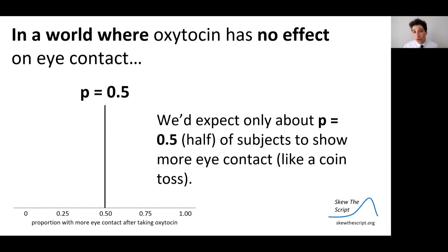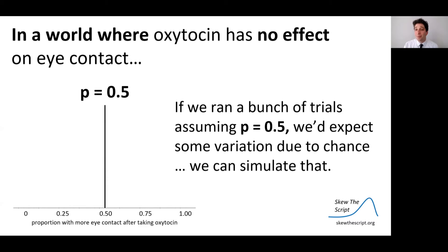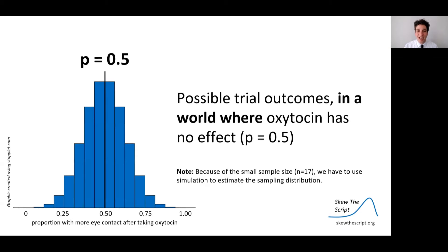So imagine a world where oxytocin has no effect on eye contact — we'd expect only about half the patients, or 50%, to show more eye contact. It would be like flipping a coin. Now imagine running many trials assuming the null — that oxytocin has no effect. By chance with random assignment, you might expect some variation: some trials, just by chance, might have more patients showing higher eye contact in the oxytocin group, and some fewer, even though it didn't do anything.